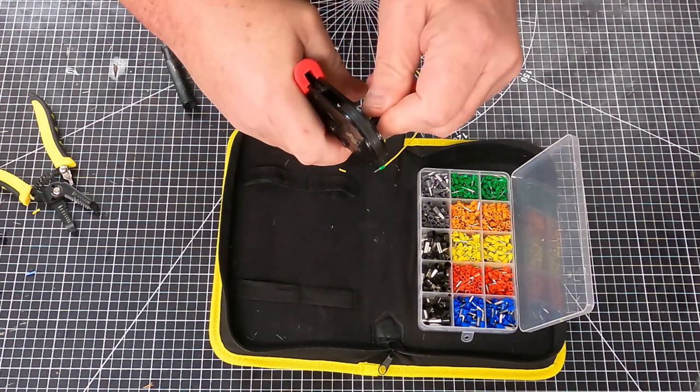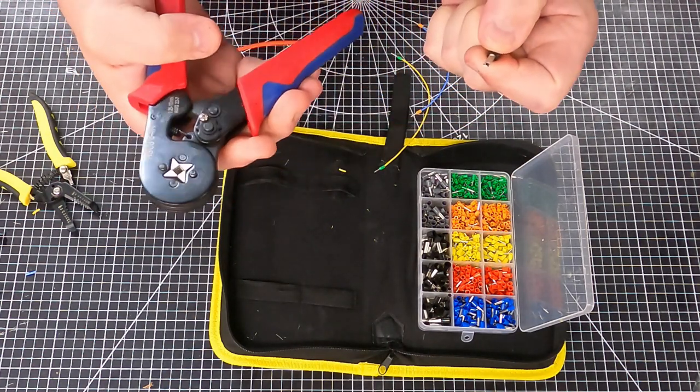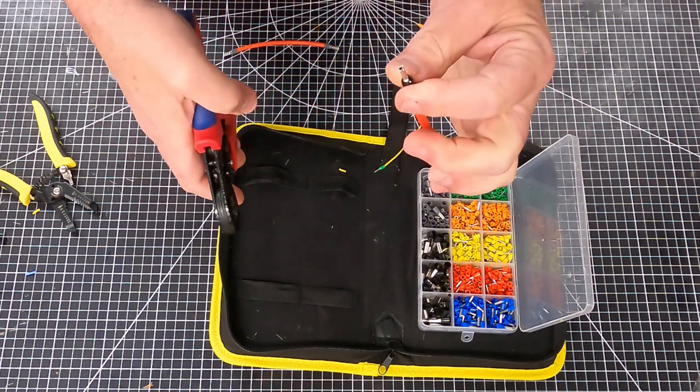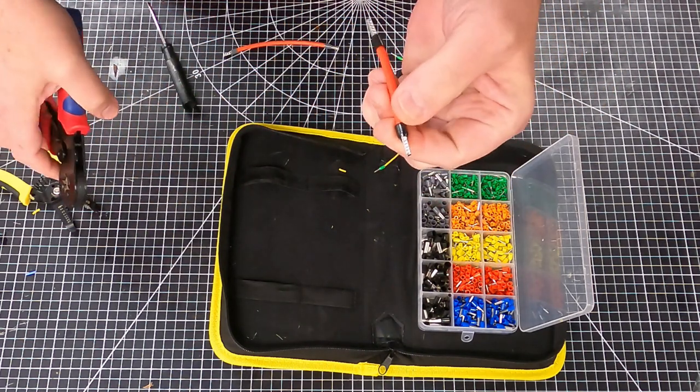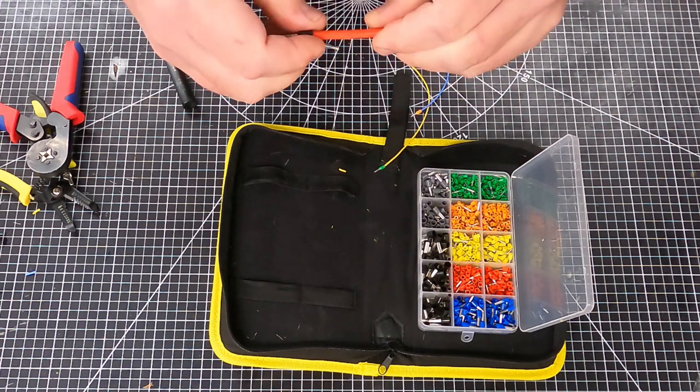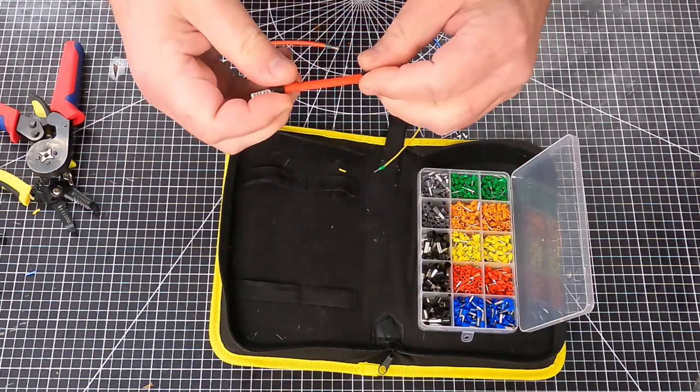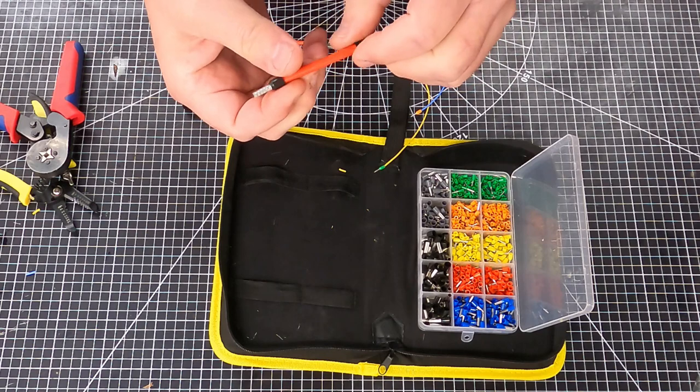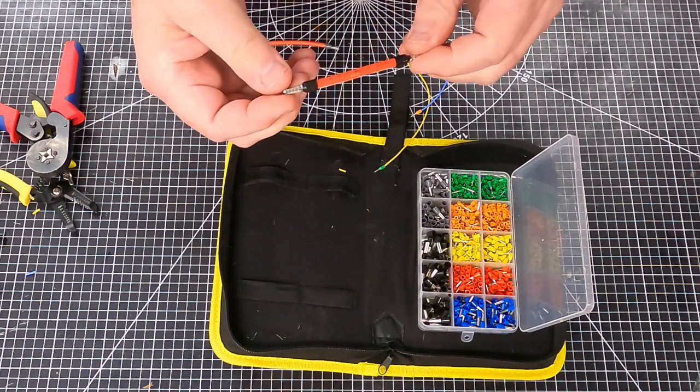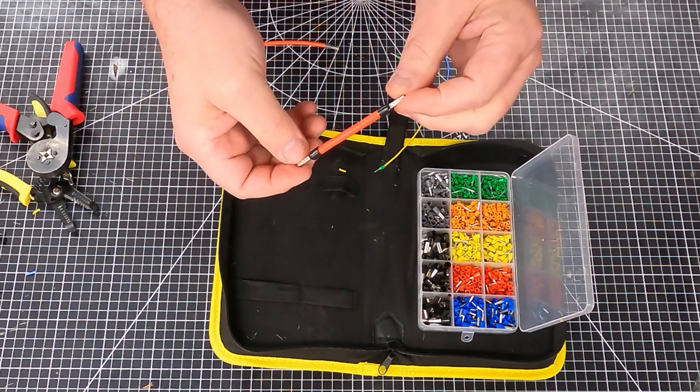Again, you don't have to worry—the crimper will adjust itself to whatever size terminal you have. These work really well; you've got excellent retention on there. Great solution for screw terminals, and makes your wiring look professional and really neat.